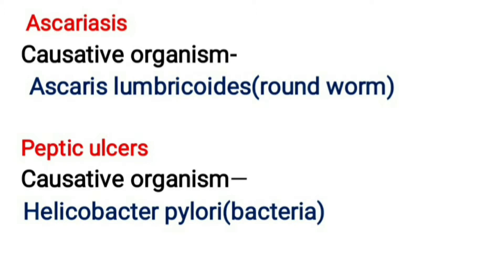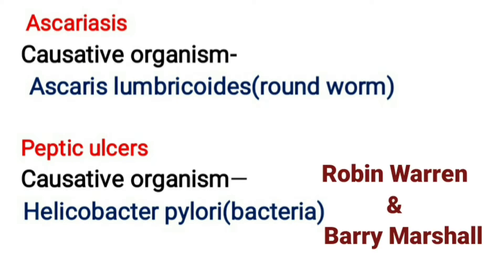Peptic ulcers are caused by the bacterium Helicobacter pylori. It was discovered by Robin Warren and Barry Marshall. For this achievement, Marshall and Warren received the Nobel Prize for Physiology and Medicine in 2005.